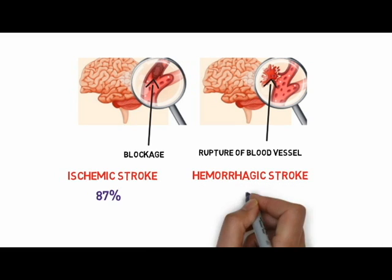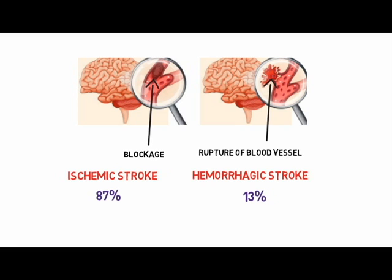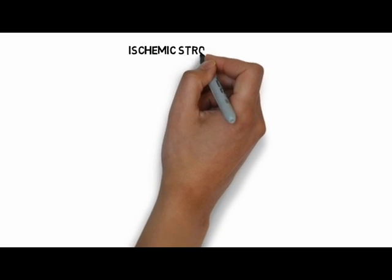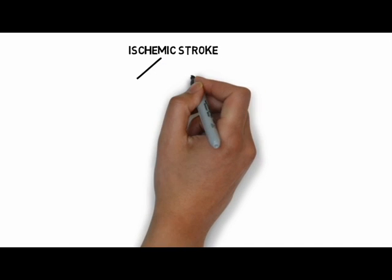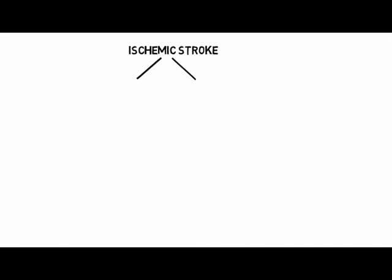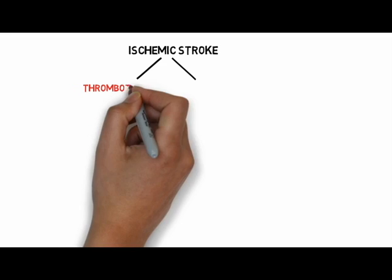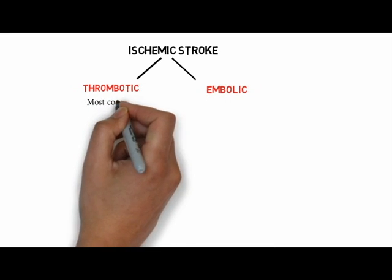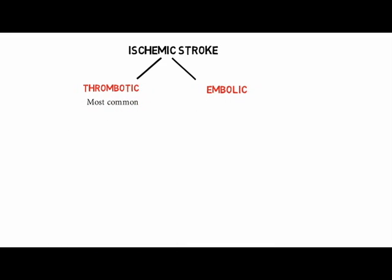Ischemic strokes often occur with little or no warning, and the results can be devastating. These are further categorized into thrombotic type and embolic type. Thrombotic is the most common type of ischemic stroke.